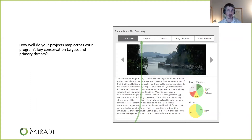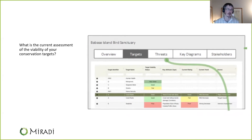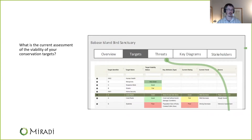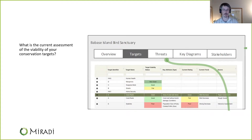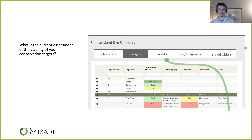The next tab starts to answer the question of what is the current assessment of the viability of your conservation targets. Here are targets with viability status along with key attributes and current ratings. This is a summary view of some of the detail that we saw from Vanessa's presentation.